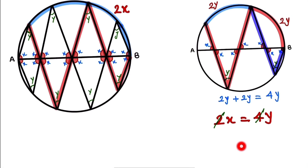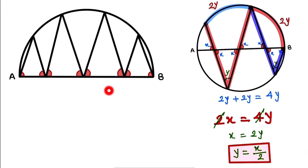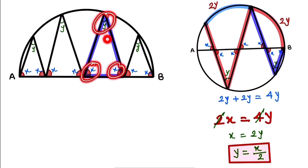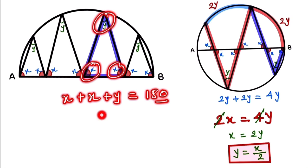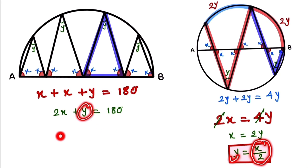Cancelling by 2, x equals 2y, so y equals x over 2. Now returning to the original figure: all red angles are x and the upper angles are all y. In any triangle, the sum of all angles is 180 degrees. So x plus x plus y equals 180 degrees, which gives 2x plus y equals 180.